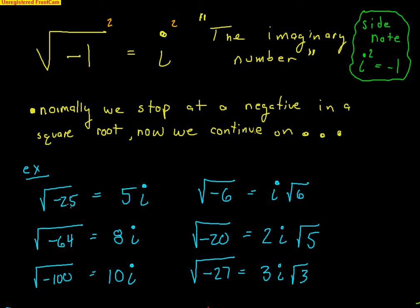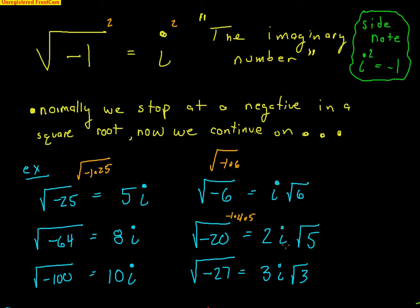Here are some examples. The square root of negative 25: the negative is an i and the 25 gives 5, so we get 5i. Similarly, √-64 becomes 8i, and √-100 becomes 10i. If it can't be a perfect square, just leave it under the radical — the negative comes out as i and the radical stays. For √-20: the negative comes out as i, and 20 = 4 × 5, so the 4 comes out as 2, giving 2i√5. For √-27: 27 = 9 × 3, giving 3i√3.